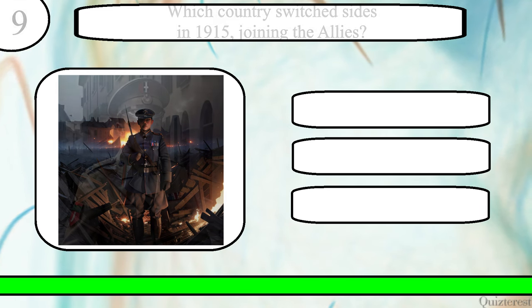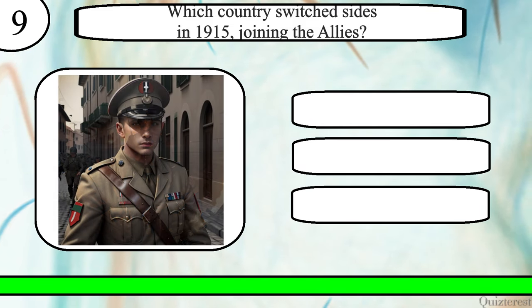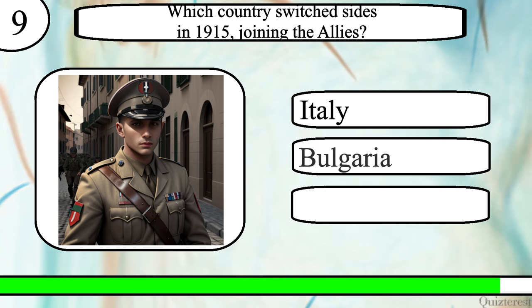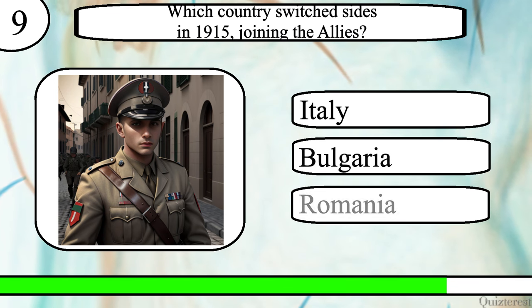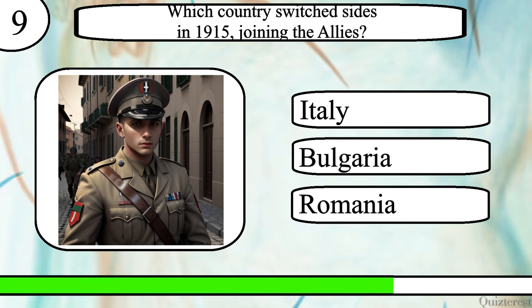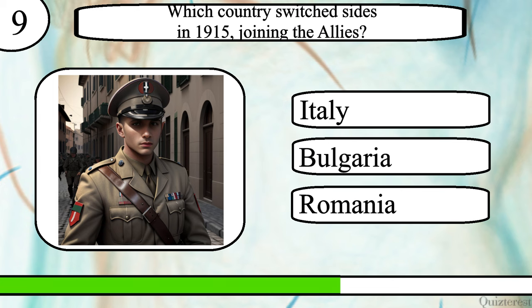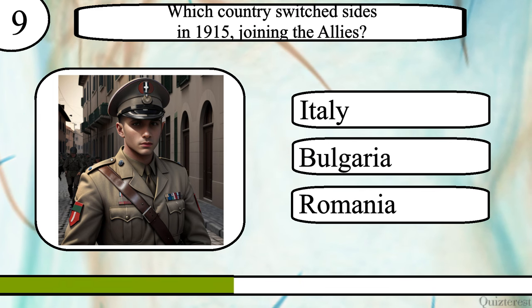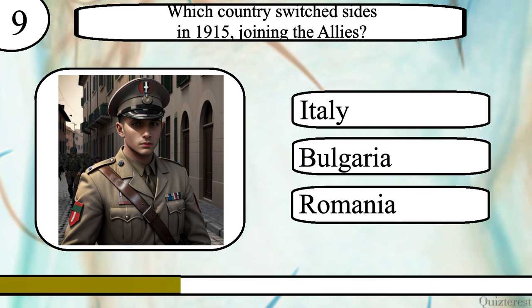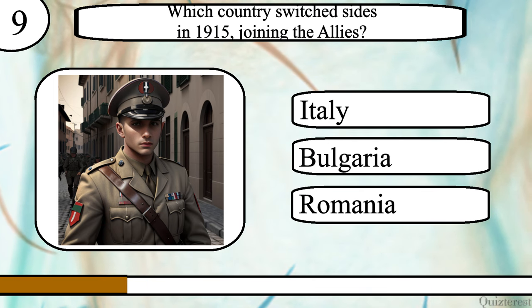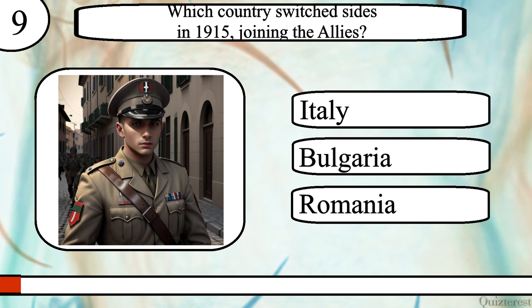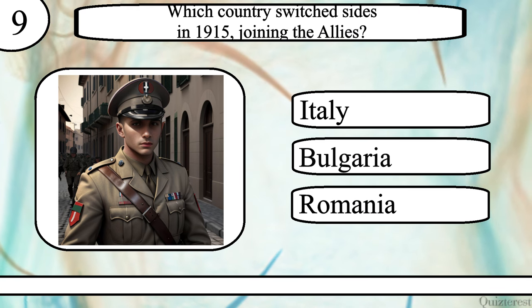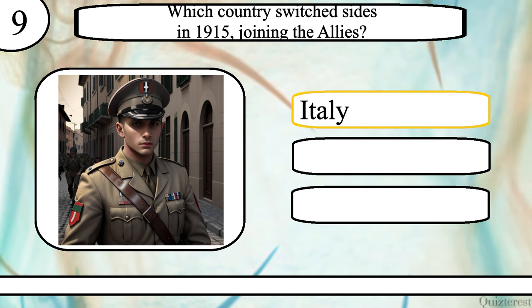Question 9. Which country switched sides in 1915, joining the Allies? Italy, Bulgaria or Romania? The correct answer is Italy.